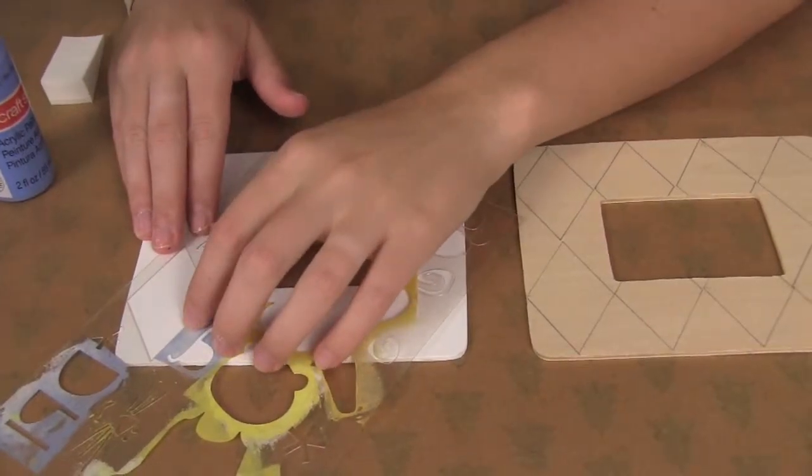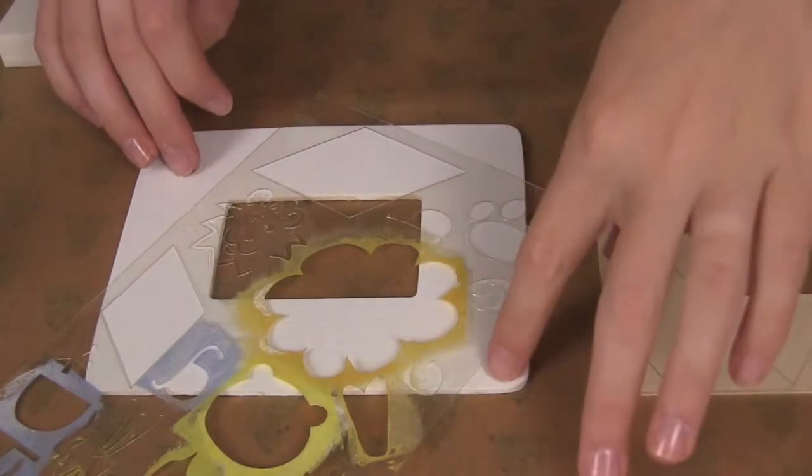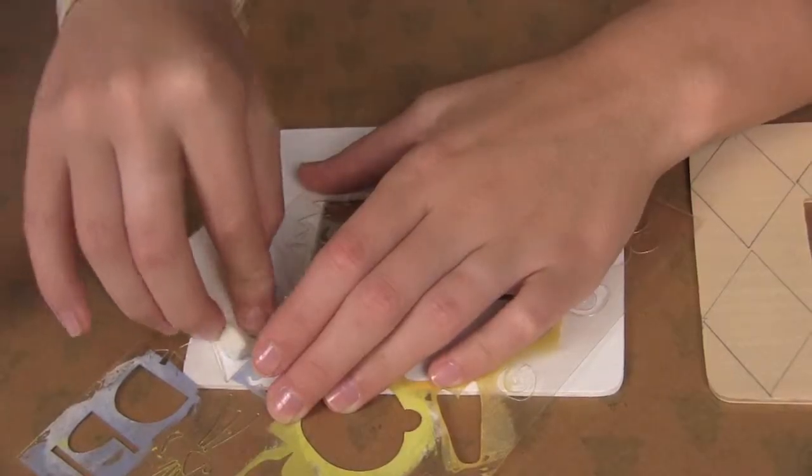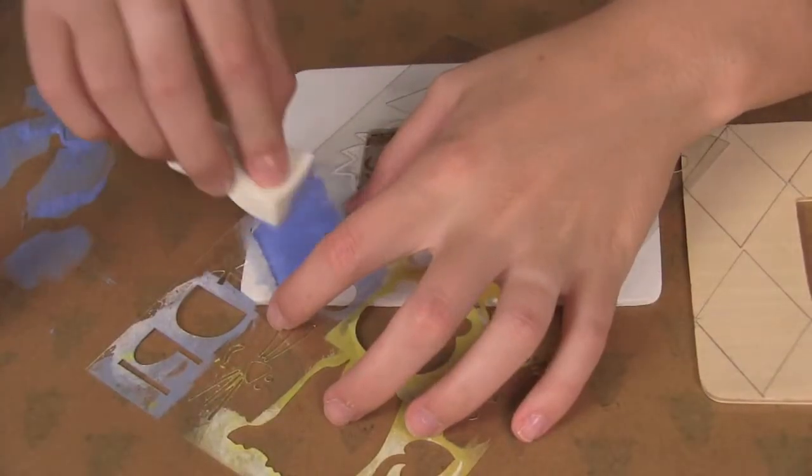We're going to line it up on the sides. We've already painted it white, which is the background color we want it to be. We're just going to continue to build diamonds.